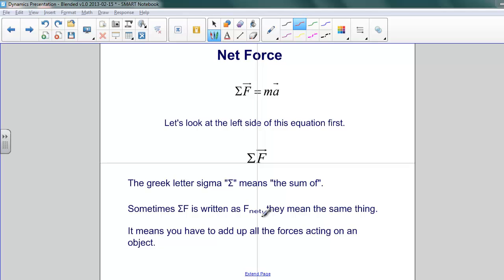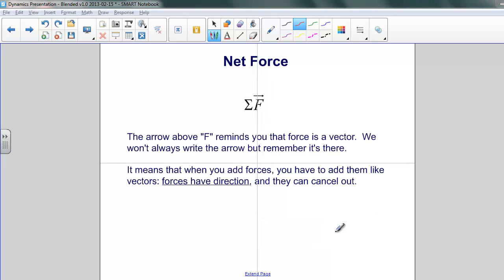Another thing about net force is that it's a vector. We put the arrow above the F to remind us of that. We won't always write the arrow, but it's important to remember that it's there. It means when you add forces, you have to add them like vectors. They have direction. They can add up in one direction or cancel each other out. I can push a box one way, you can push it the other, and the net force is much less than either of the amounts of force we're applying.